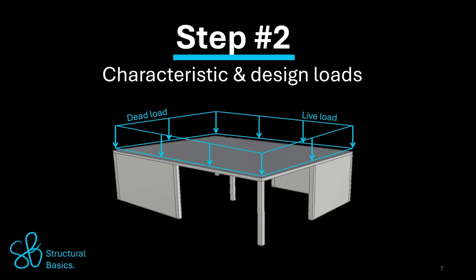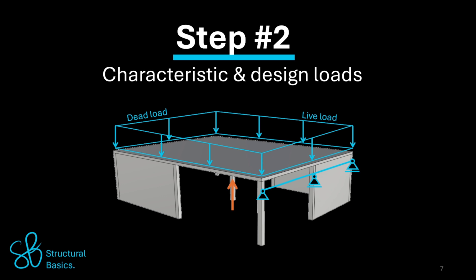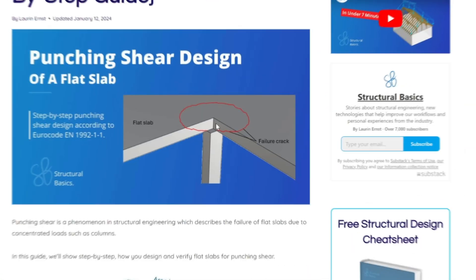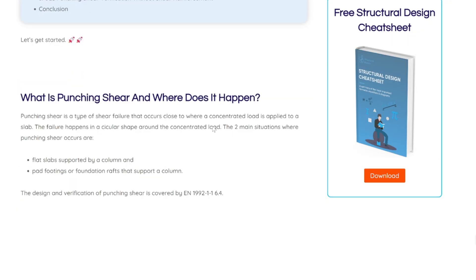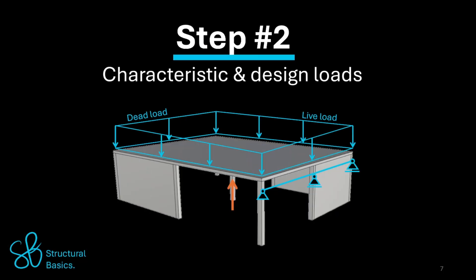The most accurate way to calculate the reaction force of the column is to set up an FE model, or finite element model. Another way and good approximation is to use continuous beam formulas if the supports from columns and walls aren't too irregular. Calculating the reaction forces of a flat slab isn't the topic of this video, but I'll leave a link in the description for a blog post where I explain how to calculate the reaction forces with continuous beam formulas. We'll verify punching shear for a column reaction force of 1093 kN.